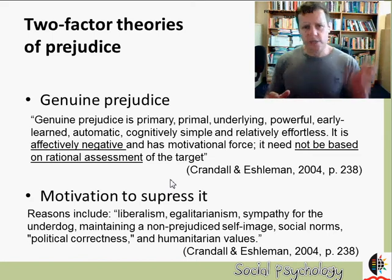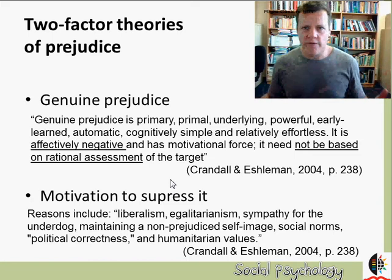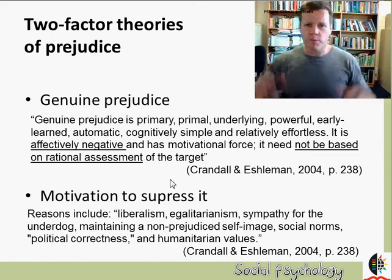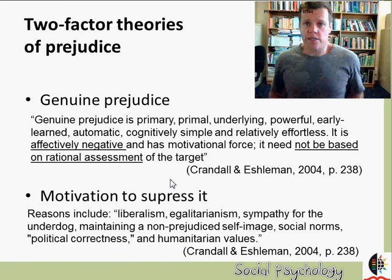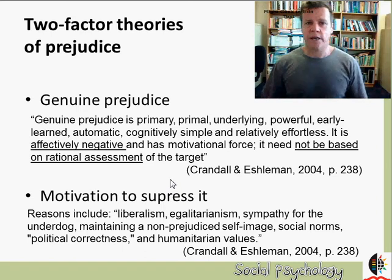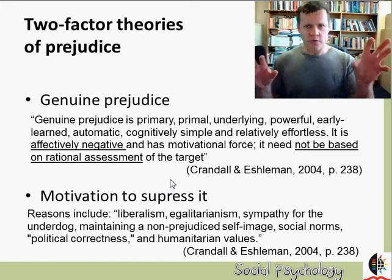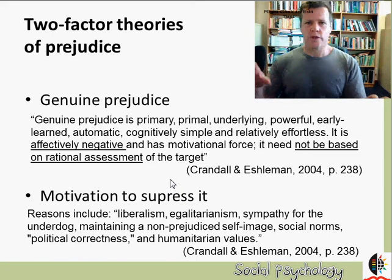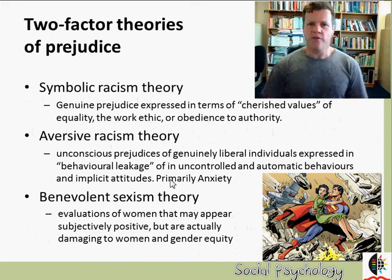The two-factor models distinguish between genuine prejudice on one hand and the motivation to suppress it on the other. We can't go around in everyday life uttering prejudiced thoughts and feelings. There are strong motivations and powerful pressures: political correctness, the image of yourself as liberal and tolerant rather than bigoted, values supporting underdogs, and nearly universal social norms and taboos against the expression of prejudice.